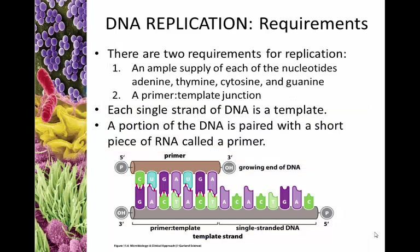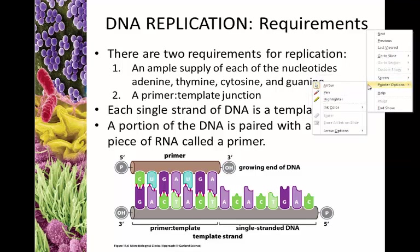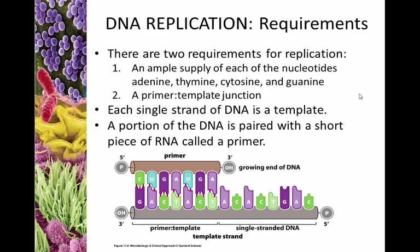There are two major requirements for replication. One is an ample supply of nucleotides - we've got to have adenines to pair with existing thymines and cytosines to pair with existing guanines. We're going to use those normal DNA pairing rules where A pairs with T and C pairs with G.